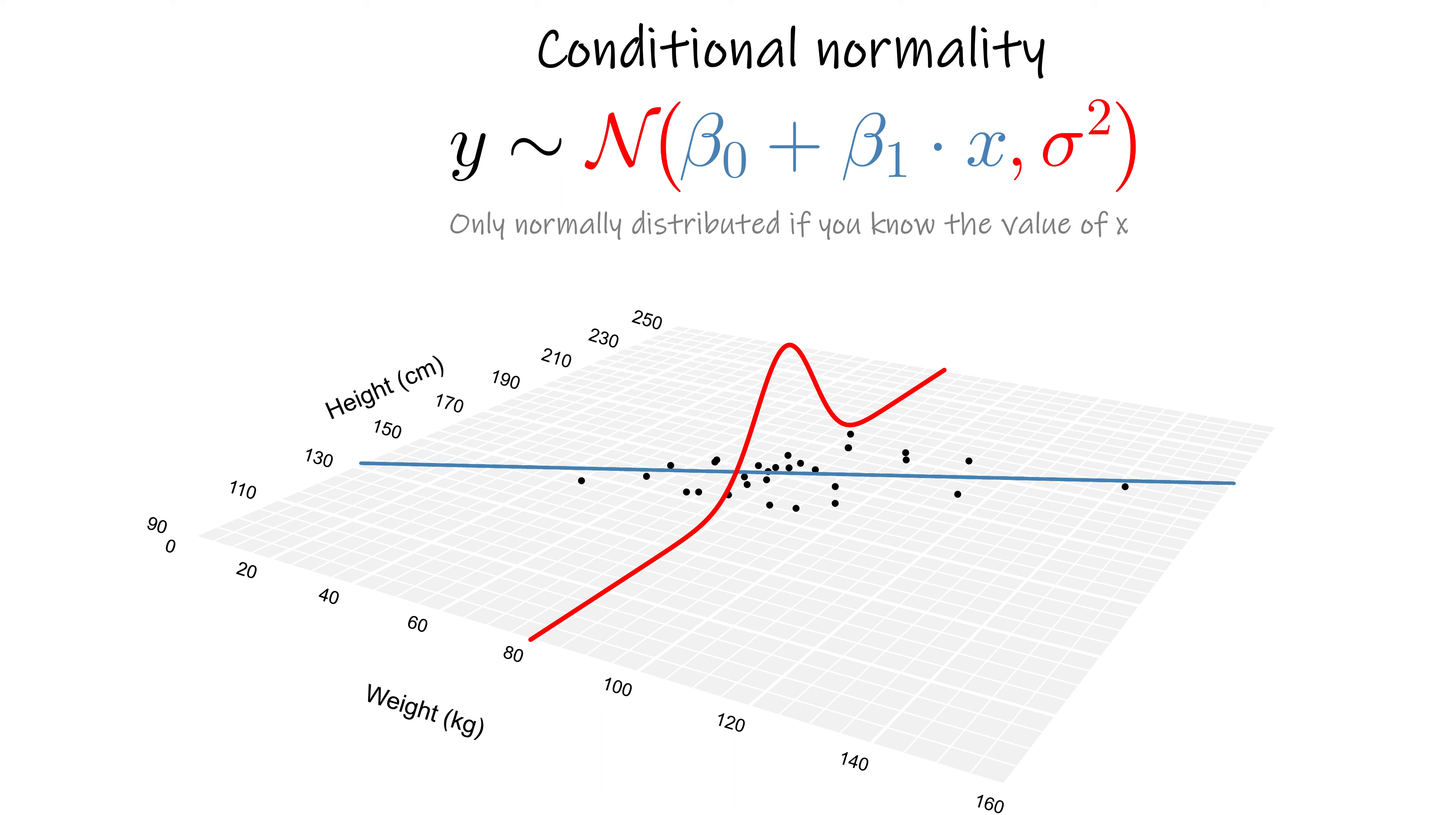So one way to think about simple linear regression is line plus 0 mean normal distribution, and another way is normal distribution with mean equal to the line. Great, but why bother with this new perspective? What's the point?